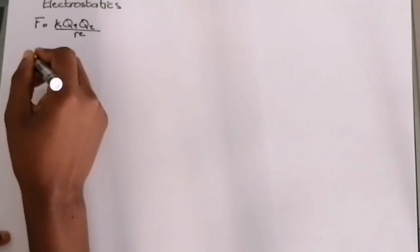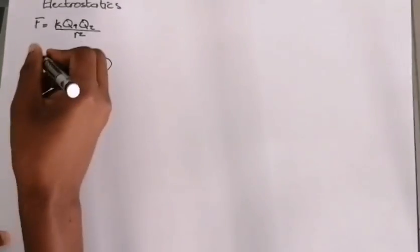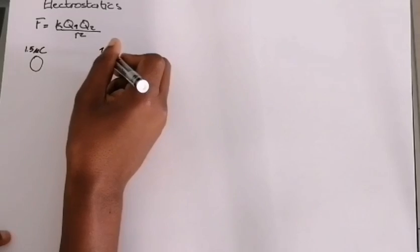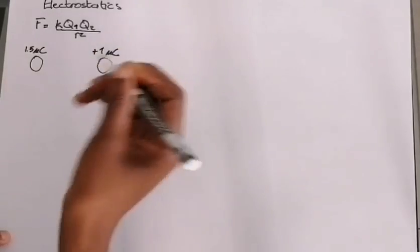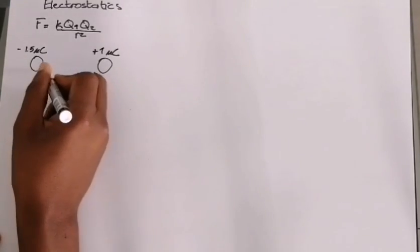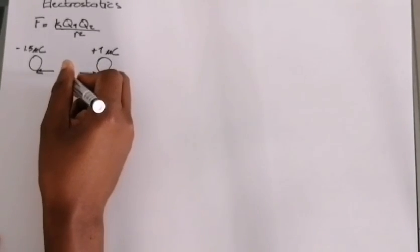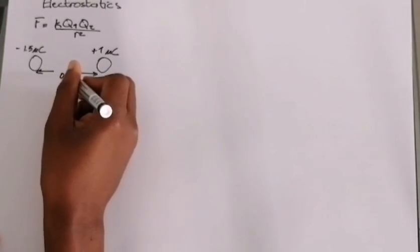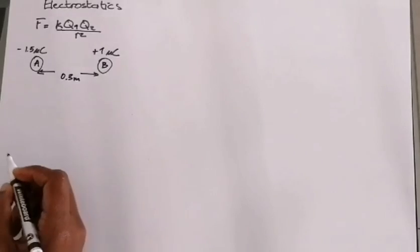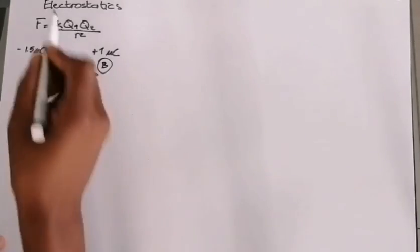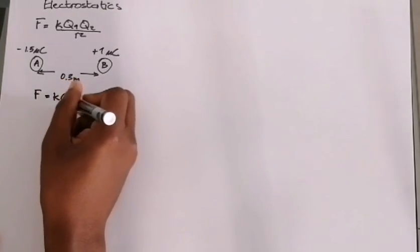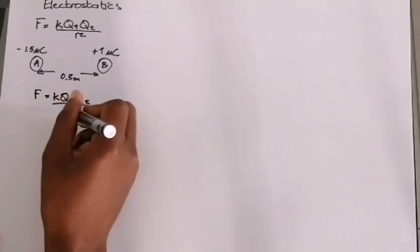This is quite simple to apply. For instance, if we have two point charges — one is 1.5 microcoulombs and the other is positive 1 and minus 1.5 microcoulombs respectively — placed a distance of 0.3 meters apart, we call them charge A and charge B. How do we calculate the electrostatic force between them?